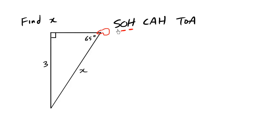So the sine of some angle, which happens to be the one we're focusing on, 65 degrees, is equals to opposite over hypotenuse. The opposite here is 3 over the hypotenuse which is X.